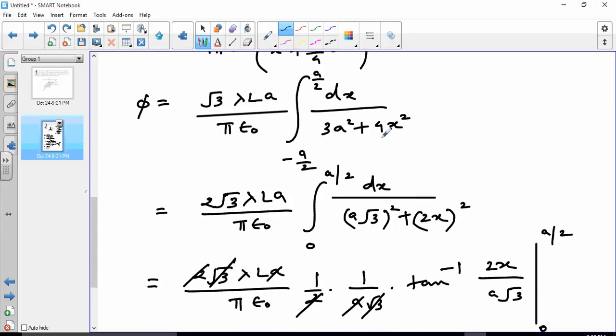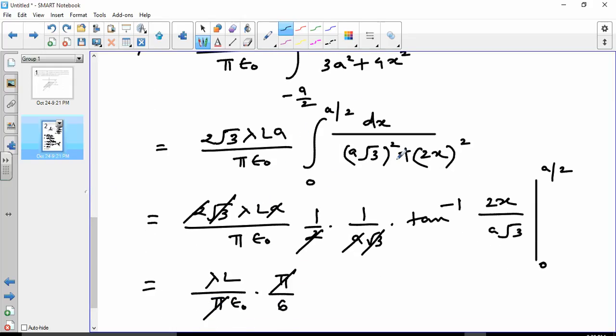Because this is an even function, it's twice 0 to a by 2. And then the integral will be this whole thing. This 2 is coming because of this 2.